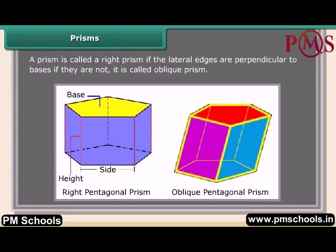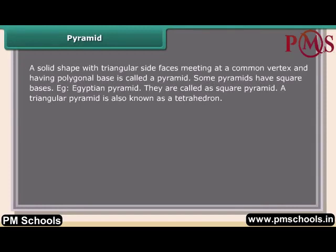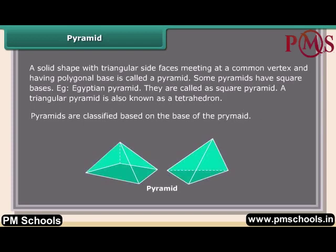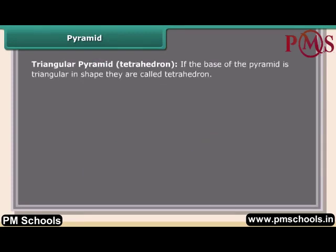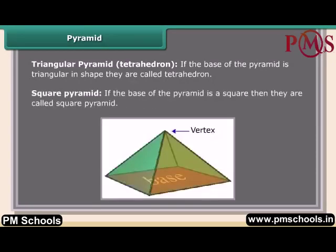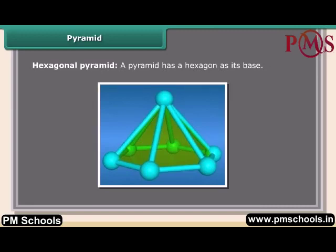Prisms are classified by their base shape. A triangular pyramid, or tetrahedron, has a triangular base. A square pyramid has a square base. A hexagonal pyramid has a hexagon as its base.